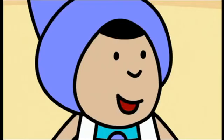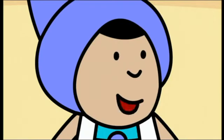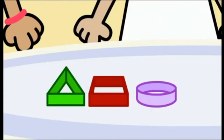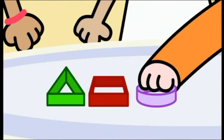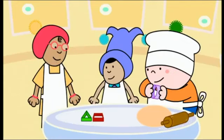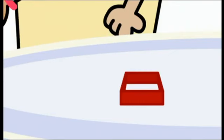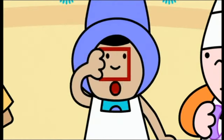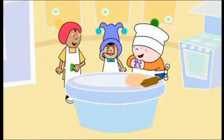Now we're ready to cut out the biscuit shapes. You choose the shape first, Oggie. I'd like to use this round shape, please. And I like this pointy one. I like this shape — it's a bit like a window.